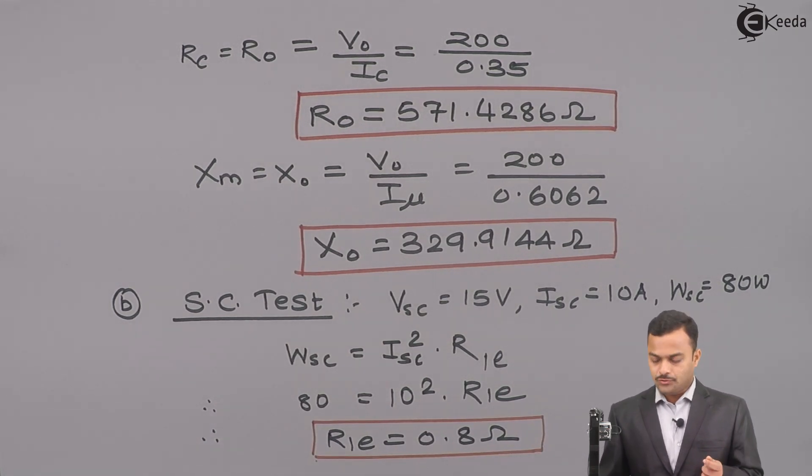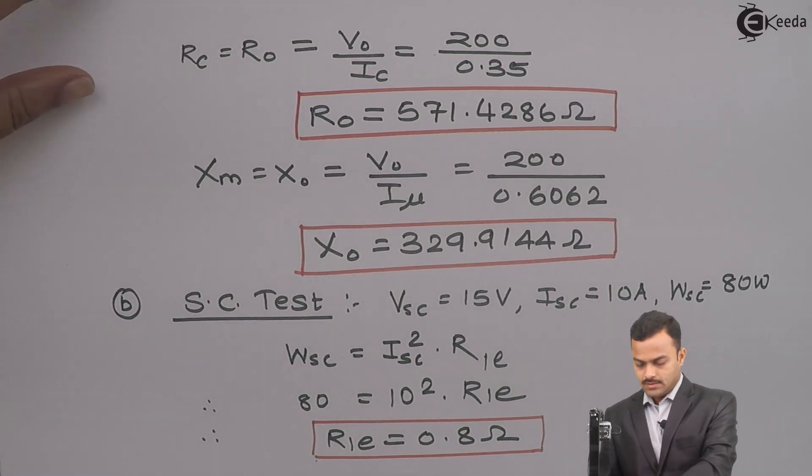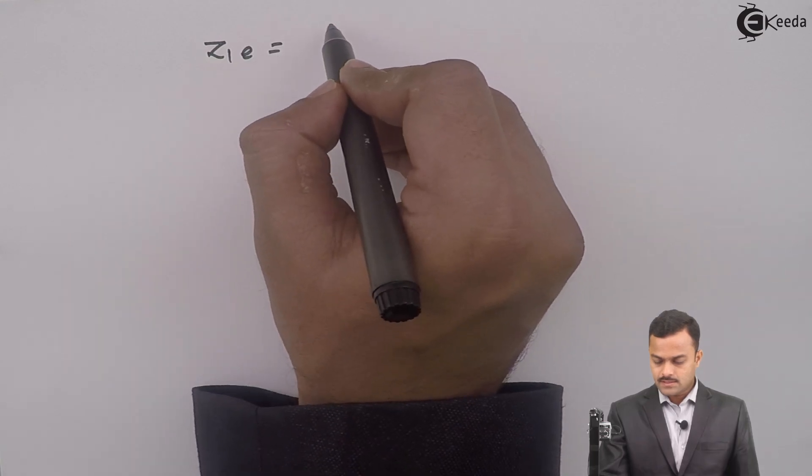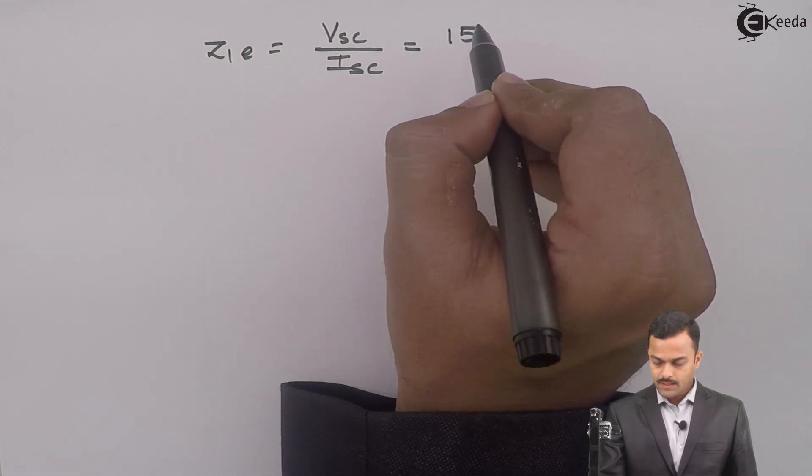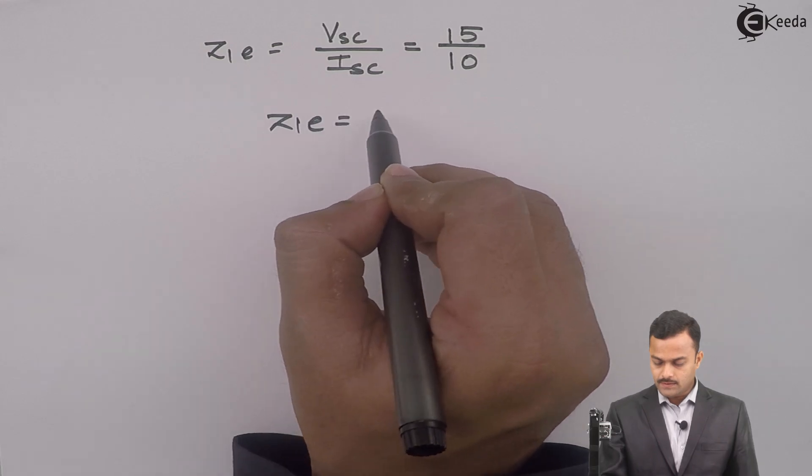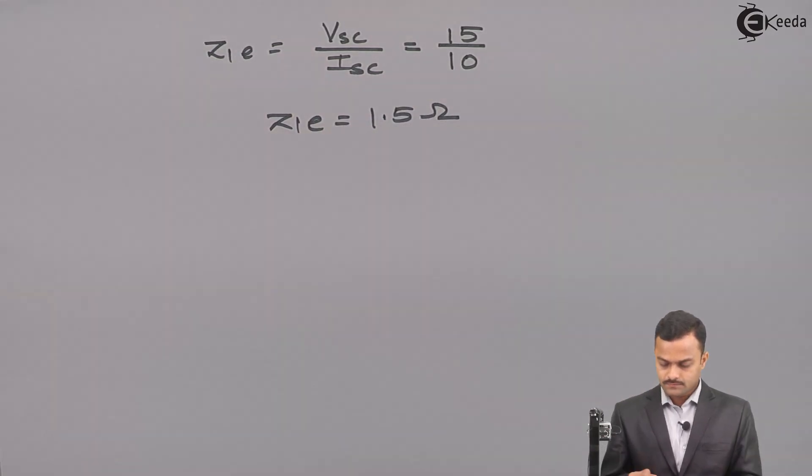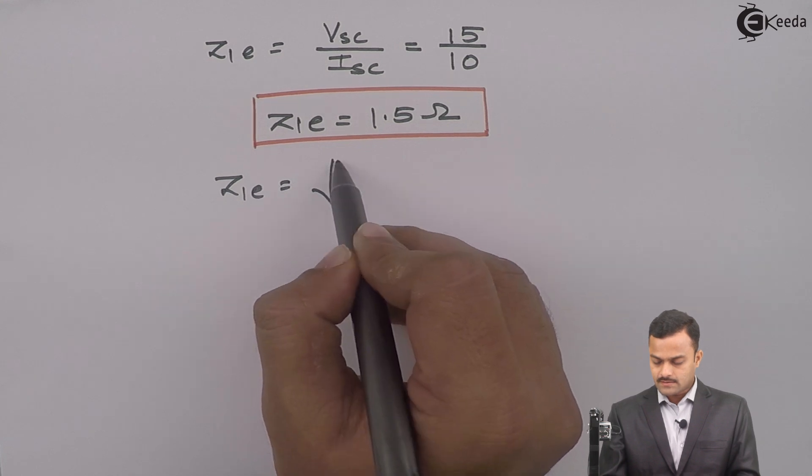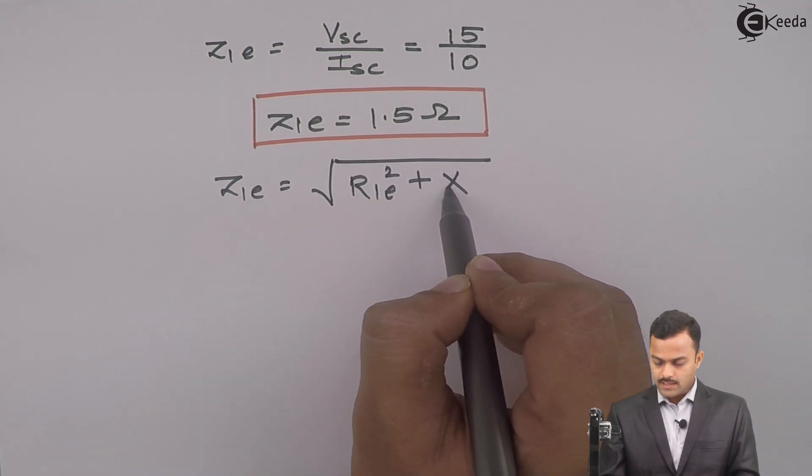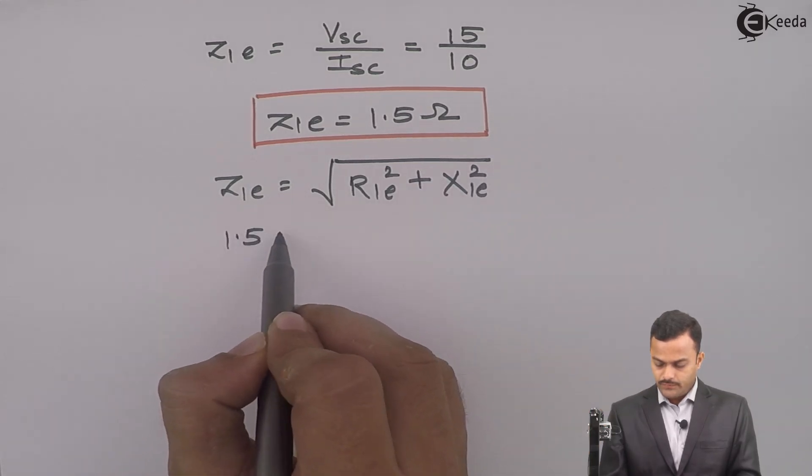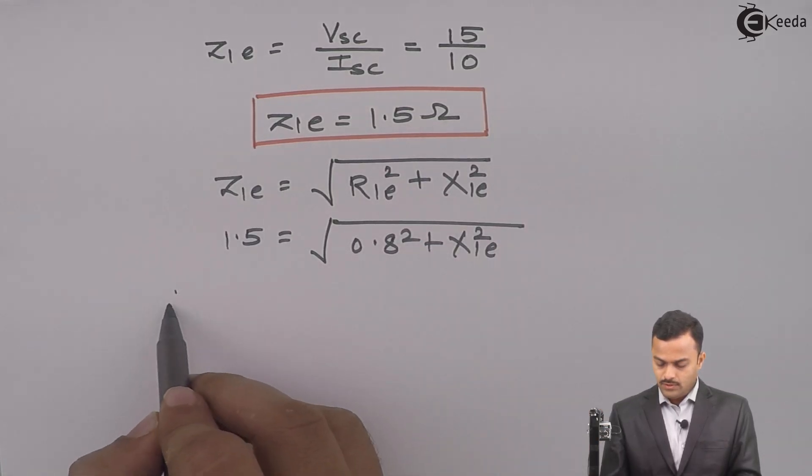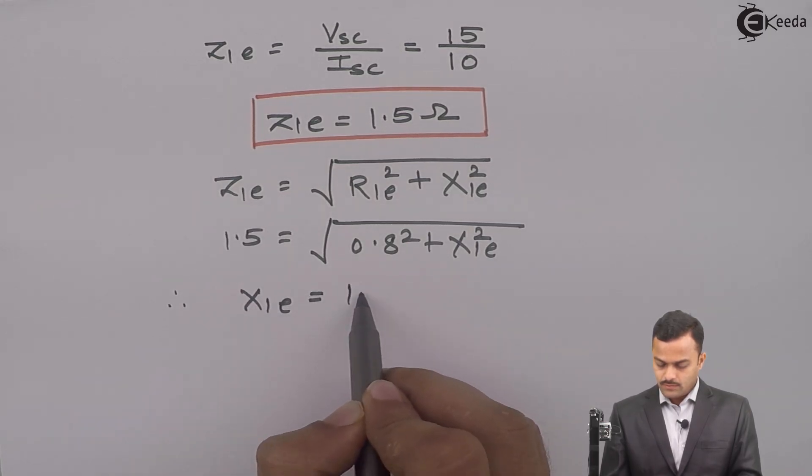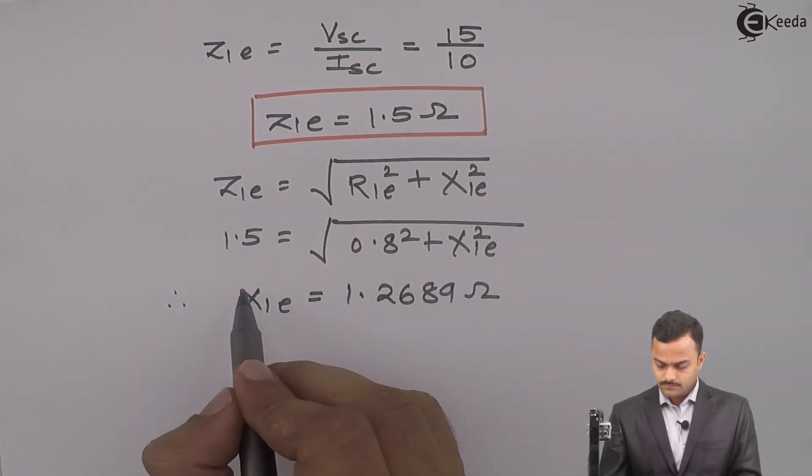Now, I know voltage, I know current, I can get impedance. Impedance Z1E is VSC upon ISC. VSC is 15, ISC is 10. So Z1E is 1.5 ohm. Impedance and resistance is known, so I can get reactance. It is a root of R1E square plus X1E square. So it is 1.5 equal to root of 0.8 square plus X1E square. So only unknown is X1E which is nothing but 1.2689 ohm.